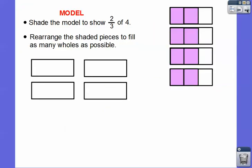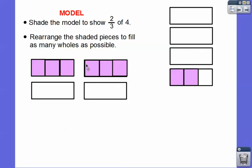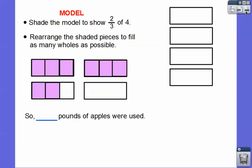We rearrange the shaded pieces to fill as many wholes as possible. Taking pieces over: here's one whole, then we bring more pieces over — there's two wholes — and we have two-thirds left over. So there's two and two-thirds pounds of apples used in Leslie's pie.